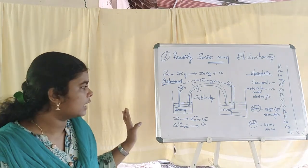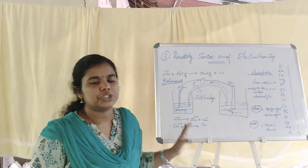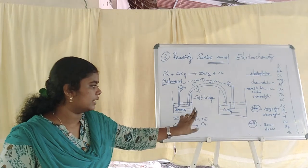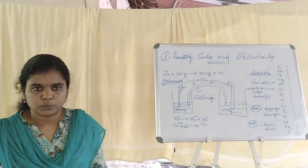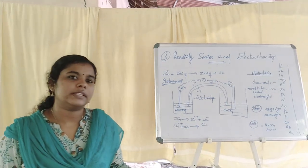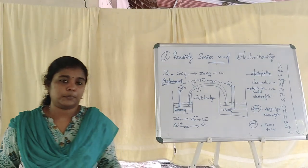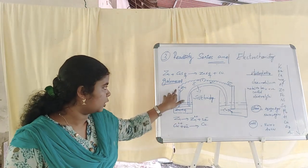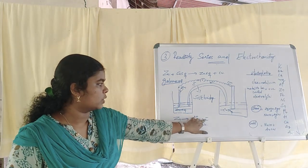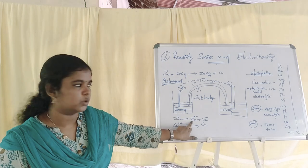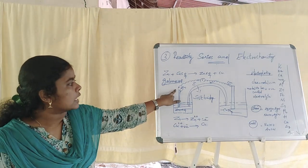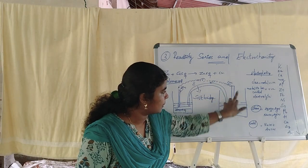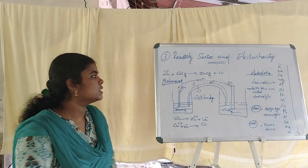This metal piece undergoes oxidation — it is the process of losing electrons. Two electrons are lost from this metal piece. The electrons travel through the wire. This is the flow of electrons through the external circuit.